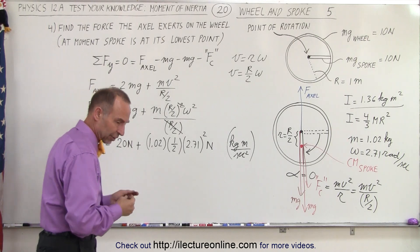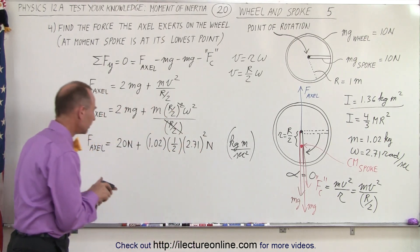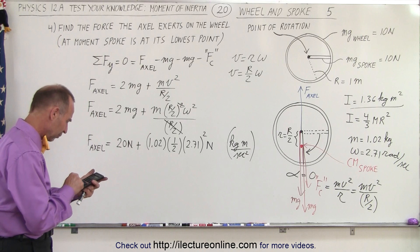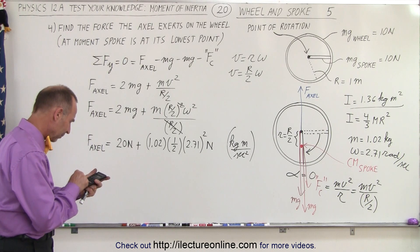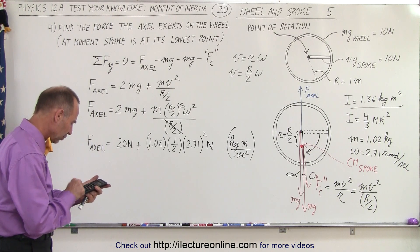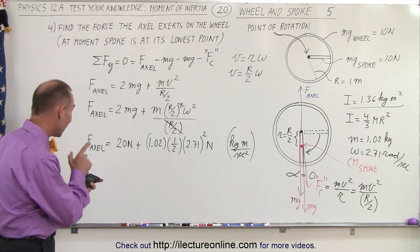So when we add that all together, notice we have 2.71 squared times 0.5 times 1.02, which is 3.75, added to 20.